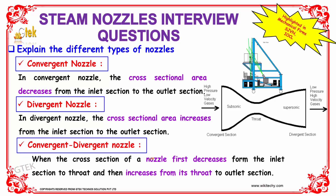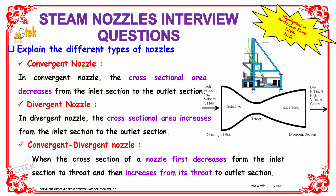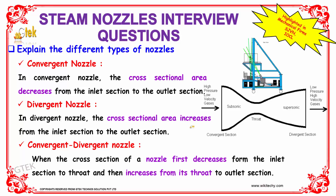If you see about the convergent nozzle, the convergent nozzle will be having the cross-sectional area that is going to be decreasing from the inlet section to the outlet section. The divergent nozzle will be having the cross-sectional area which tends to increase from the inlet section to the outlet section.